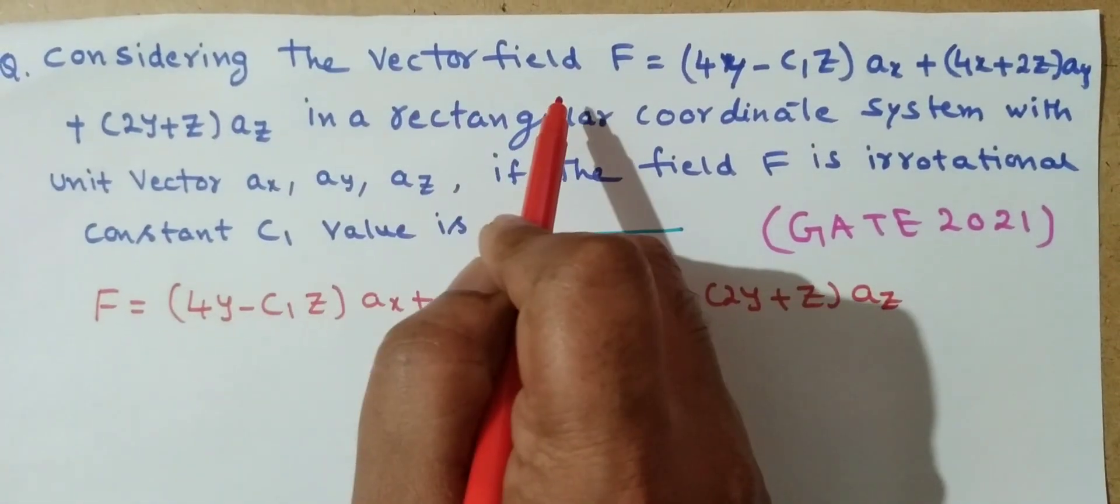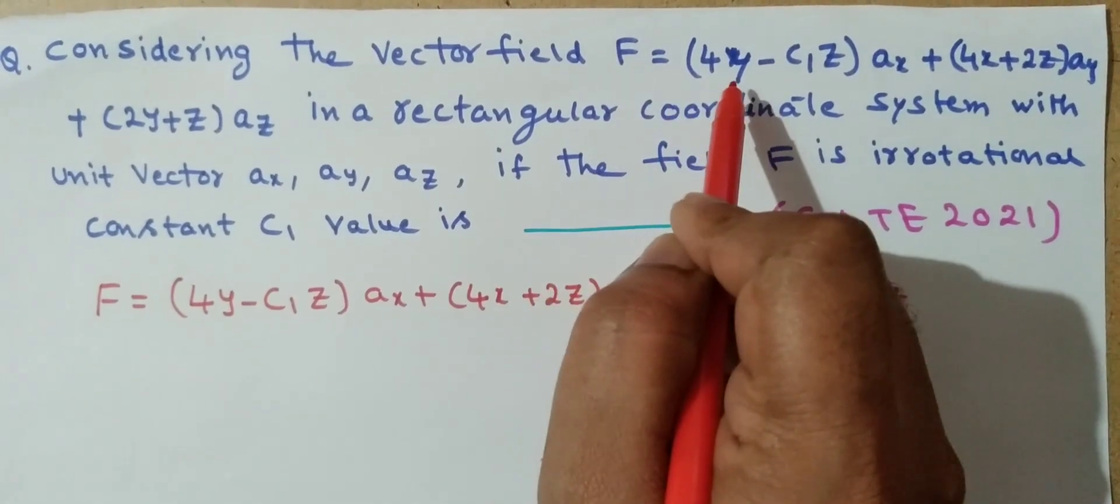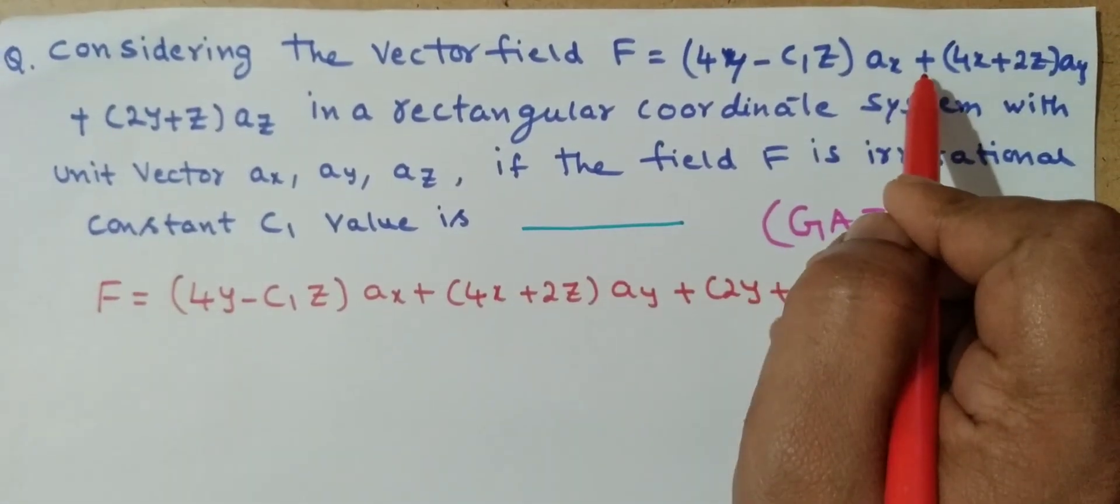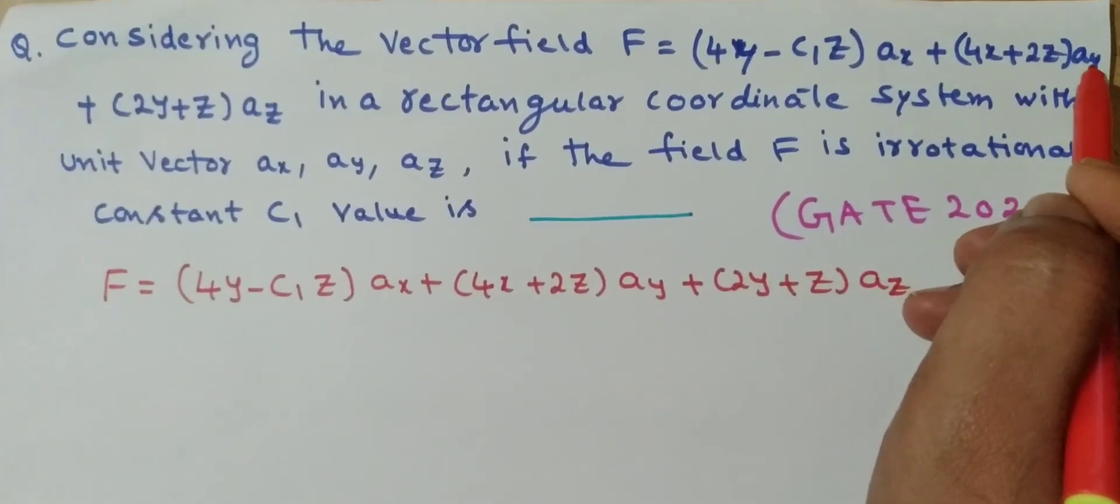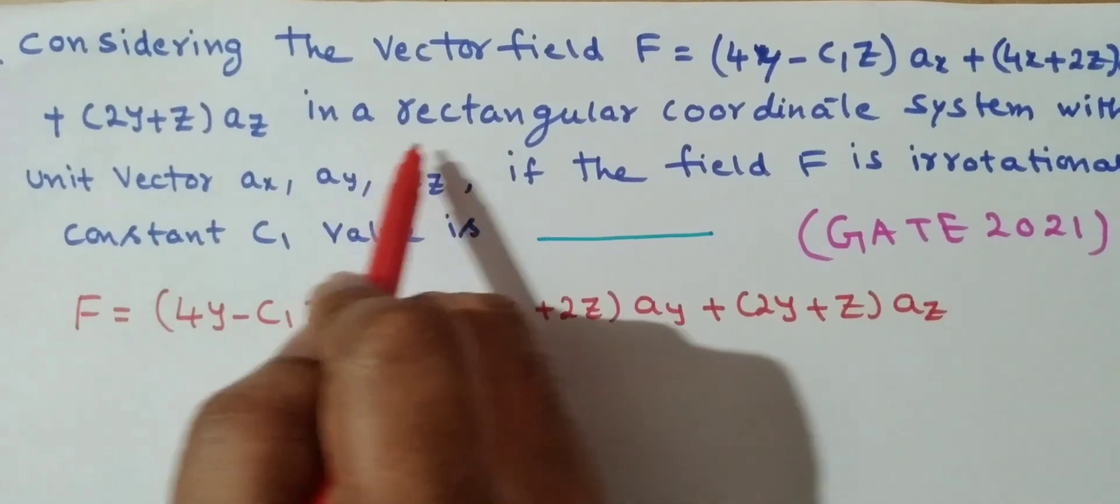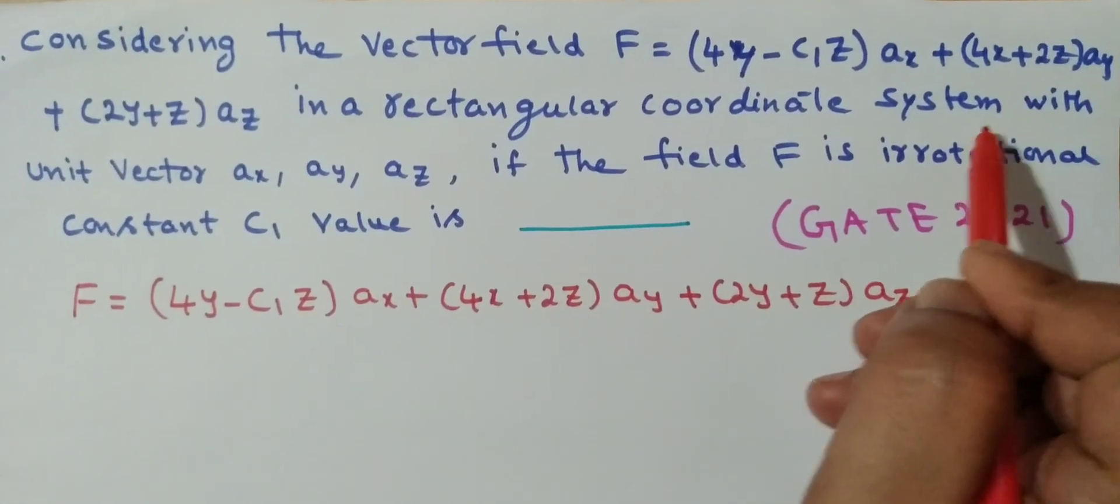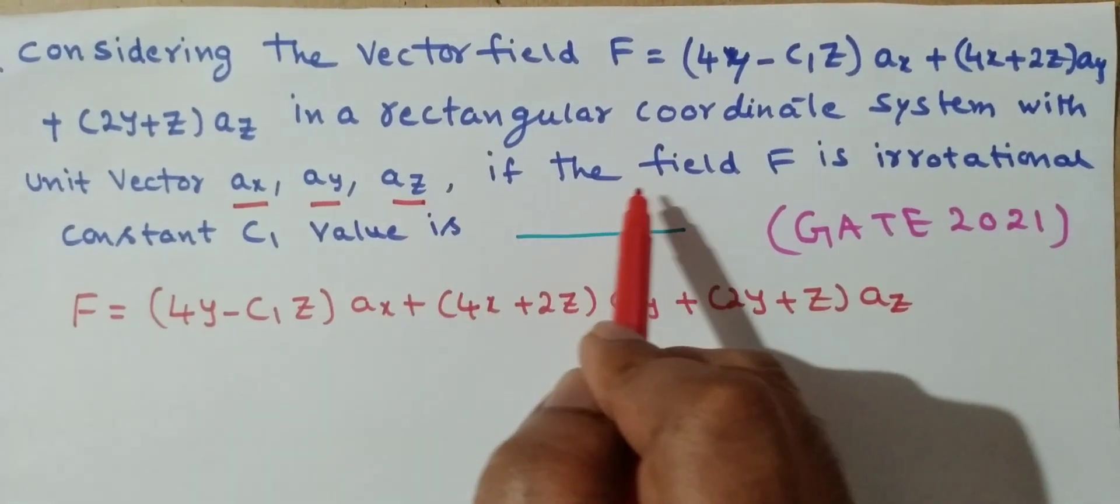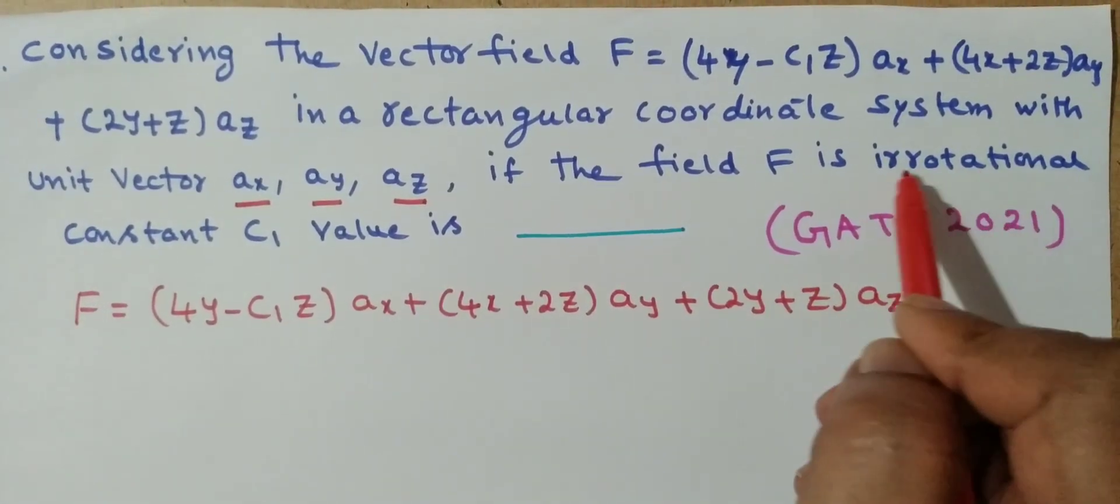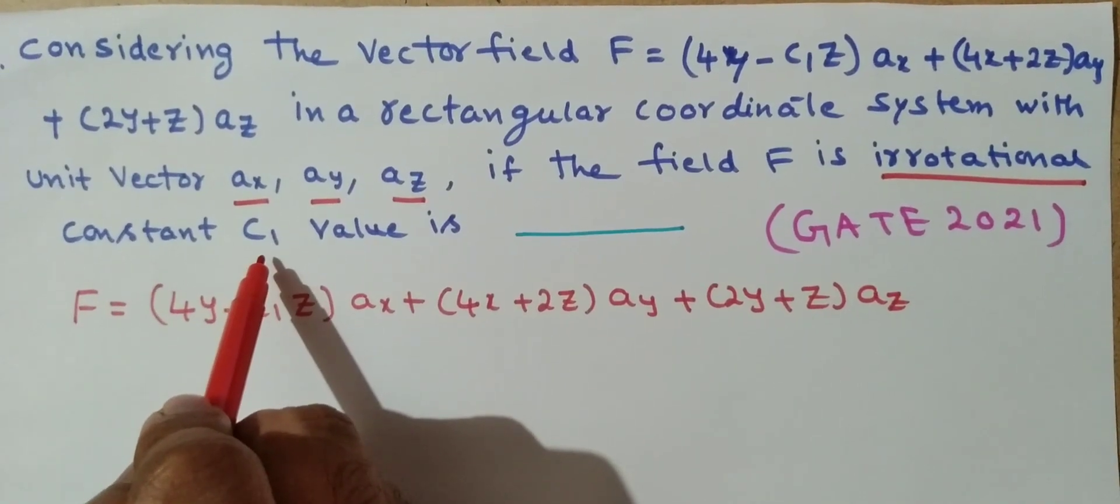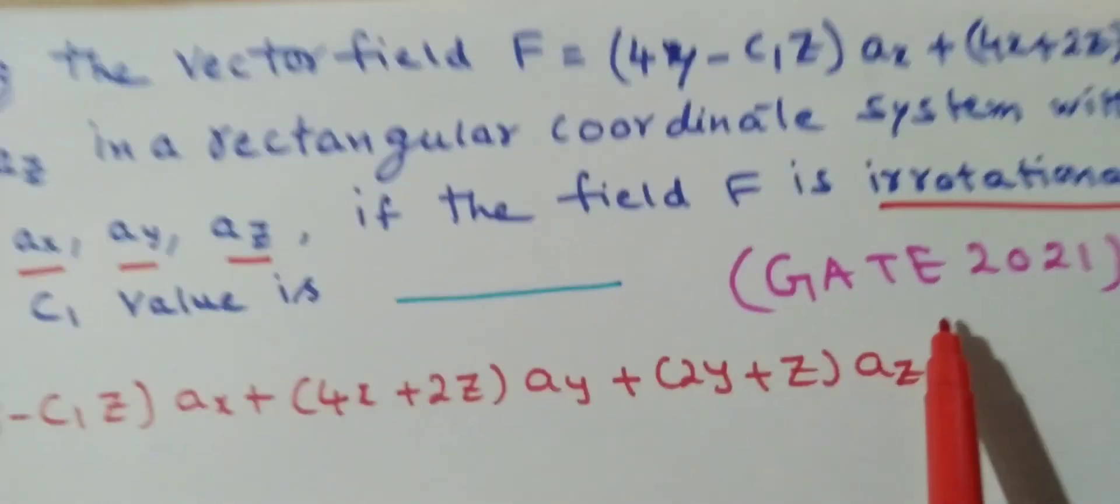Considering the vector field F = (4y - c1·z)ax + (4x + 2z)ay + (2y + z)az in a rectangular coordinate system with unit vectors ax, ay, az. If the field F is irrotational, what is the value of constant c1? This is from GATE 2021.